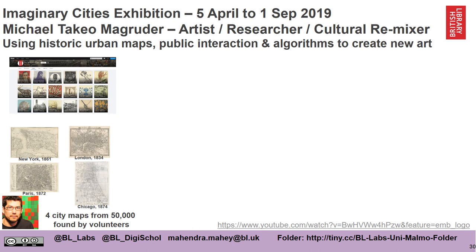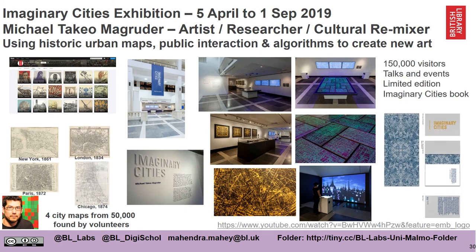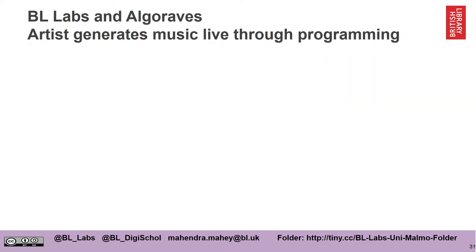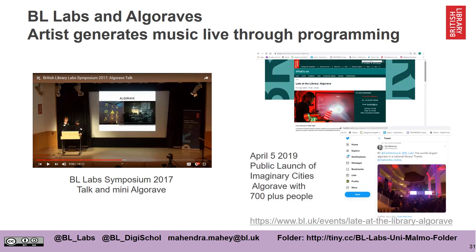In 2019 I worked with an artist called Michael Takura Magruder, and we worked on creating artworks based on four digitized maps found in these books — one of New York, London, Paris and Chicago. Michael created two physical works and two digital books based on these maps. We had a very successful exhibition with over 150,000 visitors, lots of talks and events, and we even created a limited edition book. We also worked with DJs and algoravers to take our data and perform it through programming — something called an algorave — and at the launch of the Imaginary Cities exhibition in 2019 we had an algorave where artists took our data and performed it.